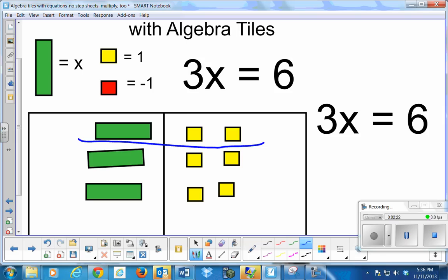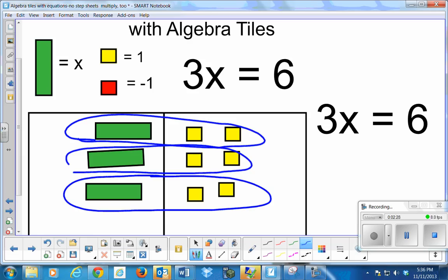I need to divide these groups into 3 equal groups. And here is 1. There's an x that's equal to 2. There's another x equal to 2. And a third x that's equal to 2. So x is equal to 2. And it's very easy to see on the algebra tiles with that one.